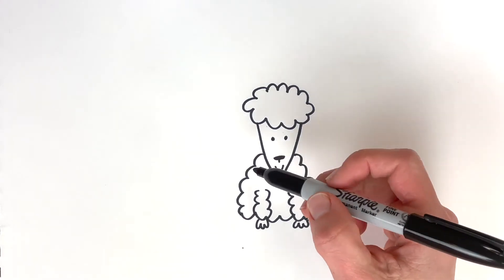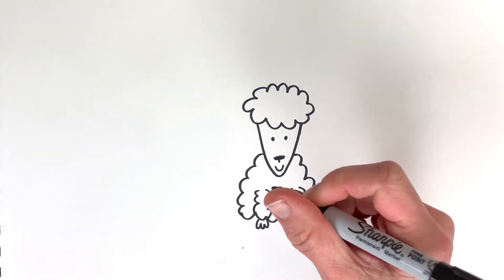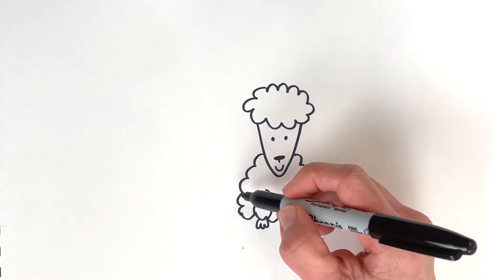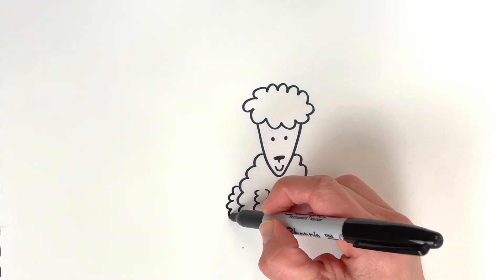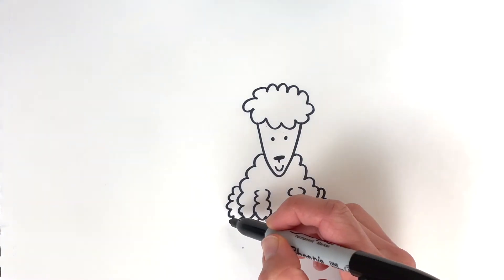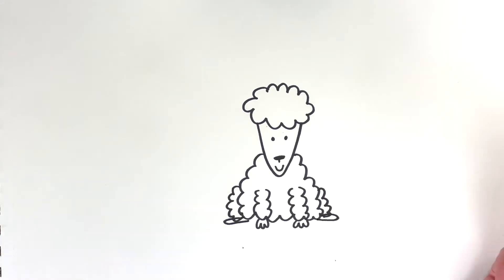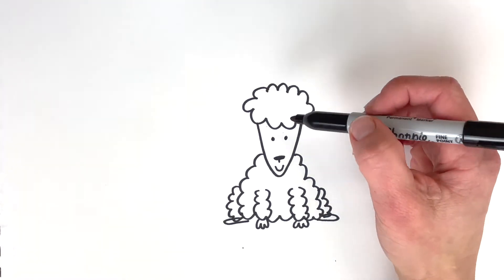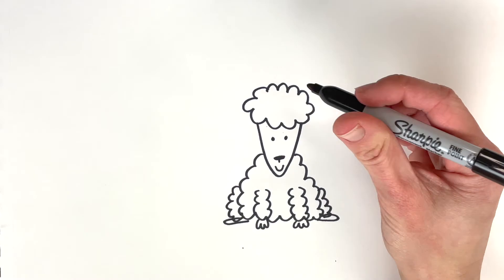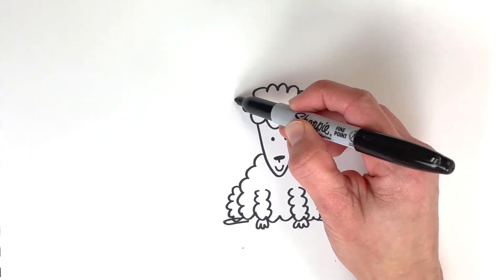And since you guys totally know how to do those legs, um, sort of behind there, you can do the same thing on the poodle, but just make the line puffy. And you can add a little foot like that. And this pup really needs some ears. So you can make them super big if you want. Super cute.